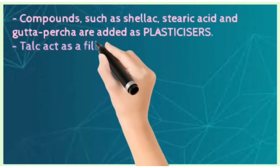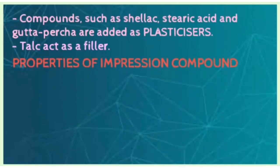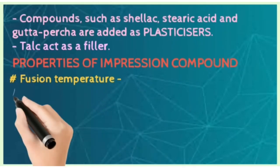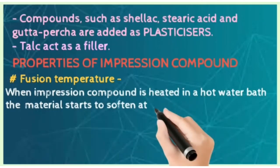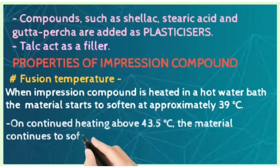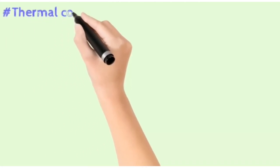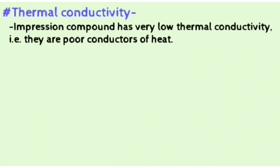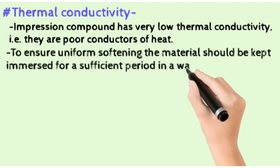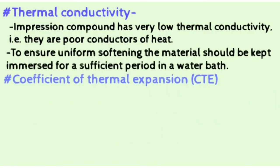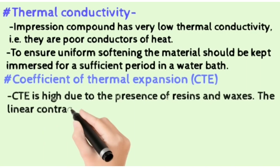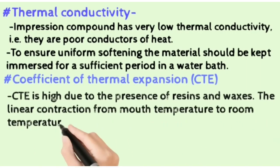Regarding the properties of impression compound: fusion temperature — when heated in a hot water bath, the material starts becoming soft at approximately 39 degrees Celsius. On continued heating above 43.5 degrees Celsius, the material continues to soften and flow to a plastic mass that can be manipulated. Thermal conductivity is very low. To ensure uniform setting, the material should be immersed for a sufficient period in a water bath. The coefficient of thermal expansion is high due to the presence of resins and waxes, and linear contraction from mouth temperature to room temperature is 0.3 percent.